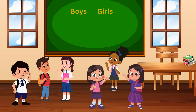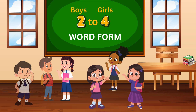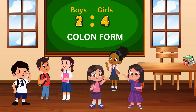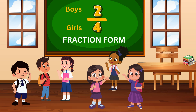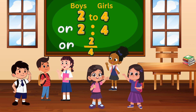We can say the ratio of boys to girls is two to four. Or we can represent the ratio by putting a two, a colon, and then four. Or we can represent the ratio as a fraction. These are the three ways to write a ratio: by using words, a colon, or as a fraction. All three representations are saying the same thing.